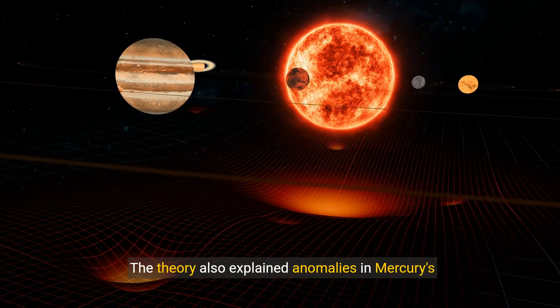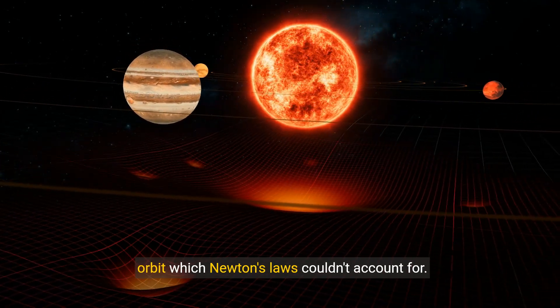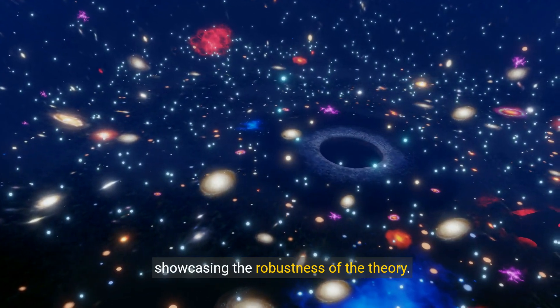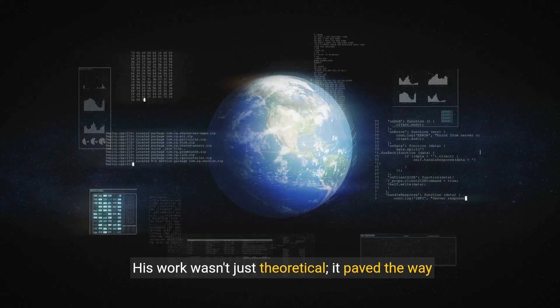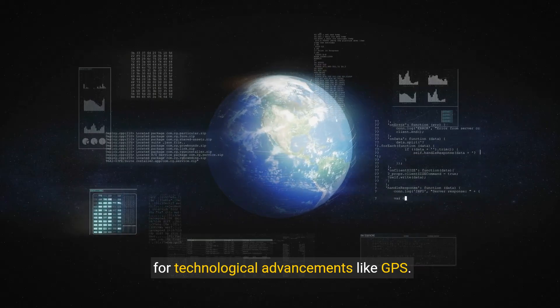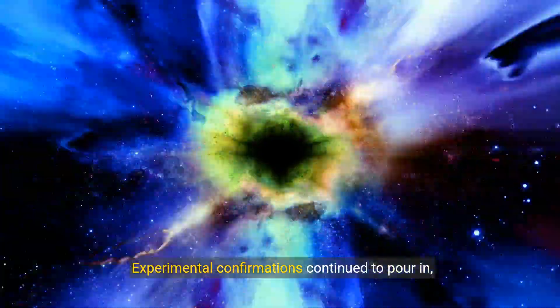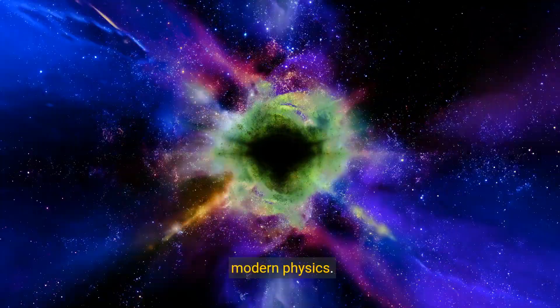The theory also explained anomalies in Mercury's orbit which Newton's laws couldn't account for. Einstein's equations precisely matched observations, showcasing the robustness of the theory. His work wasn't just theoretical; it paved the way for technological advancements like GPS. Experimental confirmations continued to pour in, solidifying general relativity as a cornerstone of modern physics.